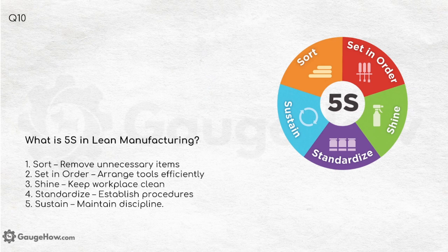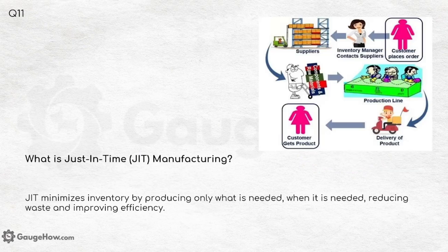What is 5S in lean manufacturing? Sort — remove unnecessary items. Set in order — arrange tools efficiently. Shine — keep the workspace clean. Standardize — establish procedures. And Sustain — maintain discipline.